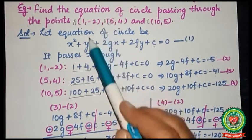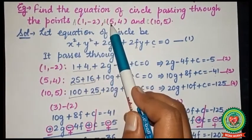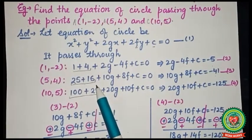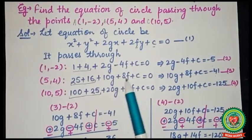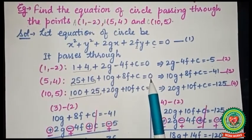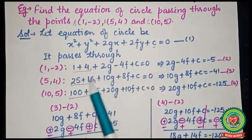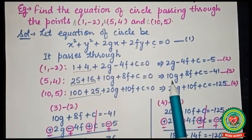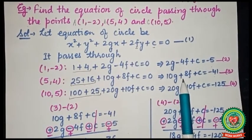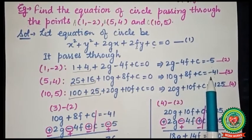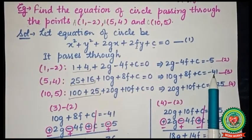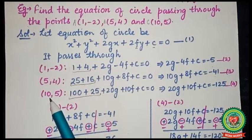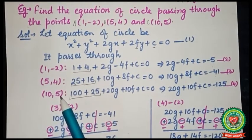Passing the equation through point B (5, 4), we get 25 + 16 + 10g + 8f + c = 0. Shifting 25 + 16 = 41 to the other side gives 10g + 8f + c = -41. Mark this as equation number 3.